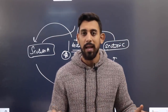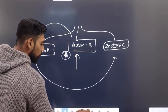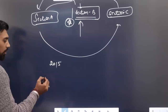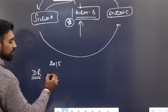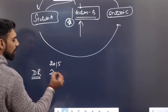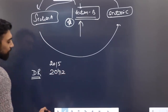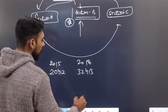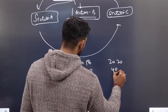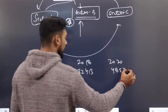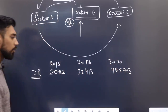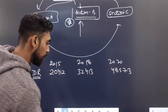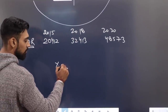Data-based questions — I don't think very direct data will be asked, but some questions like a table may be given. For example, a table showing death rate below age 1: in 2015 it was 20,412; in 2018 it became 32,413; and in 2020 it became 4,857. They could ask you to calculate the percentage change from such data.